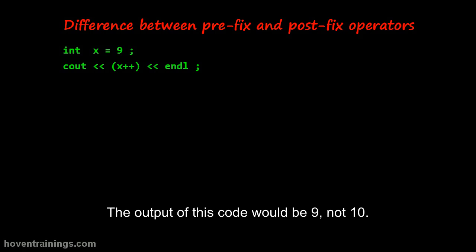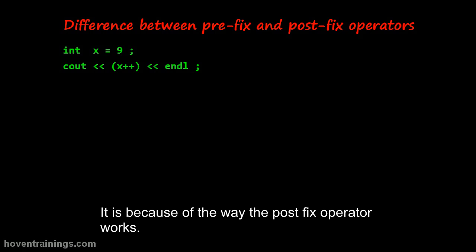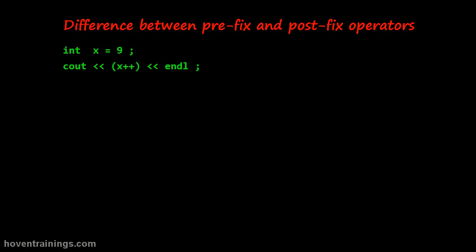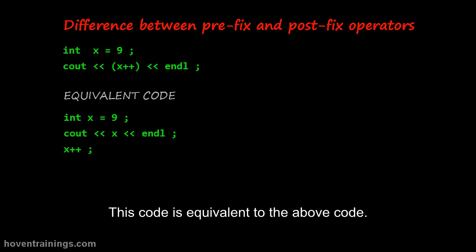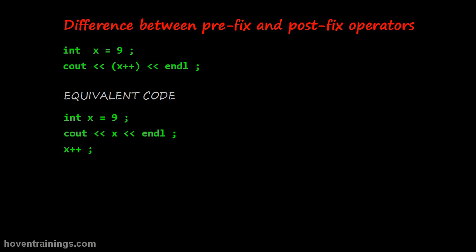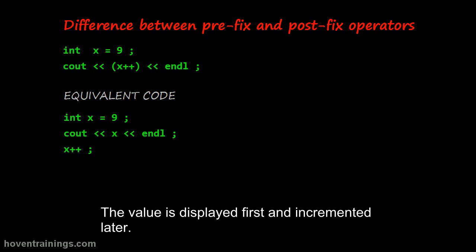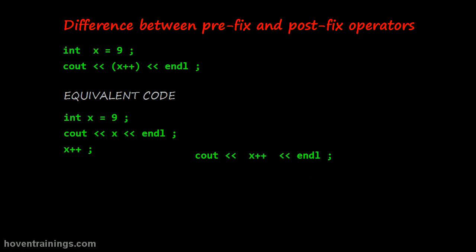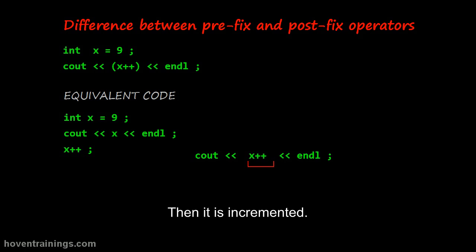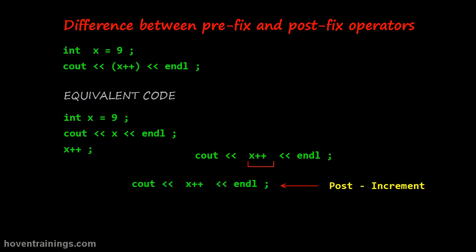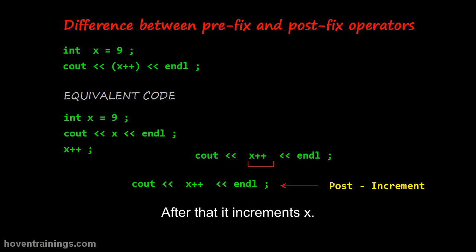The output of this postfix code would be 9, not 10. It is because of the way the postfix operator works. This code is equivalent to the above code — the value is displayed first and incremented later. Post-increment displays x first, then it increments x.